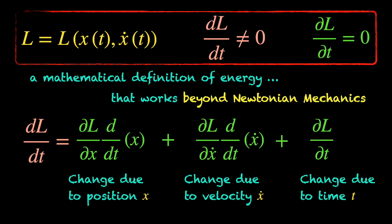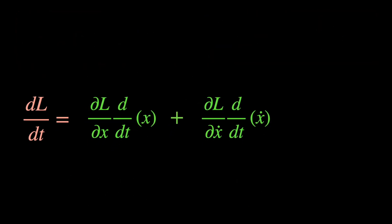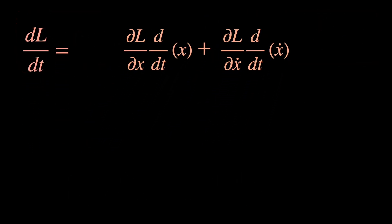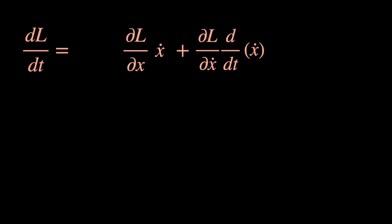With homogeneity of time, this last term del L del t is 0. So, for a system where the applied force is conservative and therefore time is homogeneous, the total time rate of change of the Lagrangian or dL dt has contributions only from the time rate of change of position and time rate of change of velocity. Let's replace dx dt by x dot, the shorthand notation we have been using.